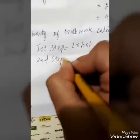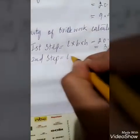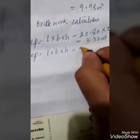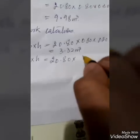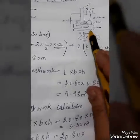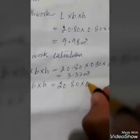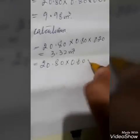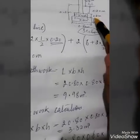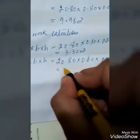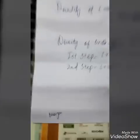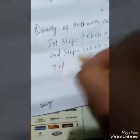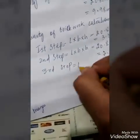For the second footing, it is also length into breadth into height. The total length is 20.80 meters, the breadth for the second footing is 0.60 meters, and the height is 0.20 meters. The total for the second footing will be 2.50 cubic meters.